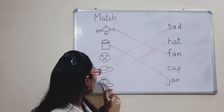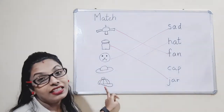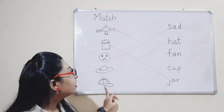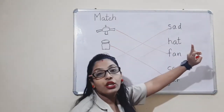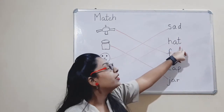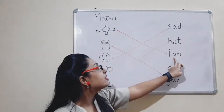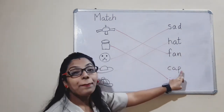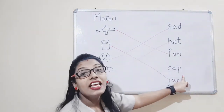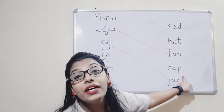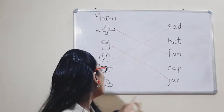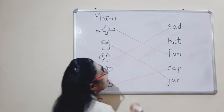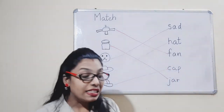Now next — what is this? C-A-P. Is this C-A-P? No. Is this C-A-P? No. Is this C-A-P? Yes. This is C-A-P — cap. So we will match the picture to the spelling. Children, this is how you have to do the second exercise.